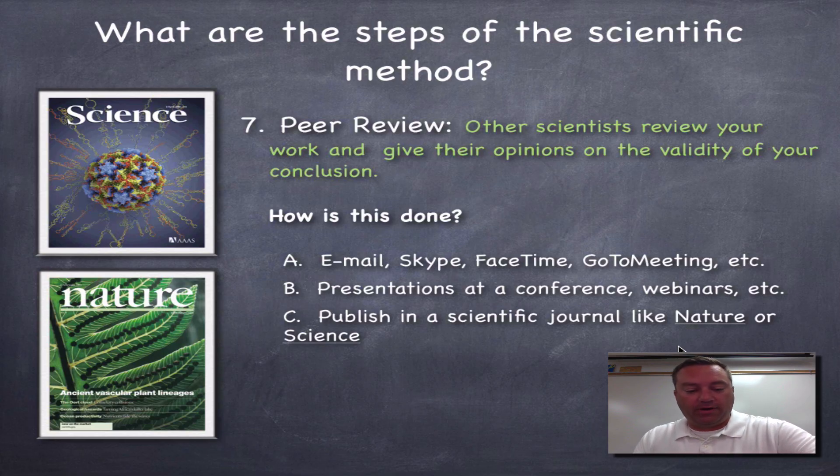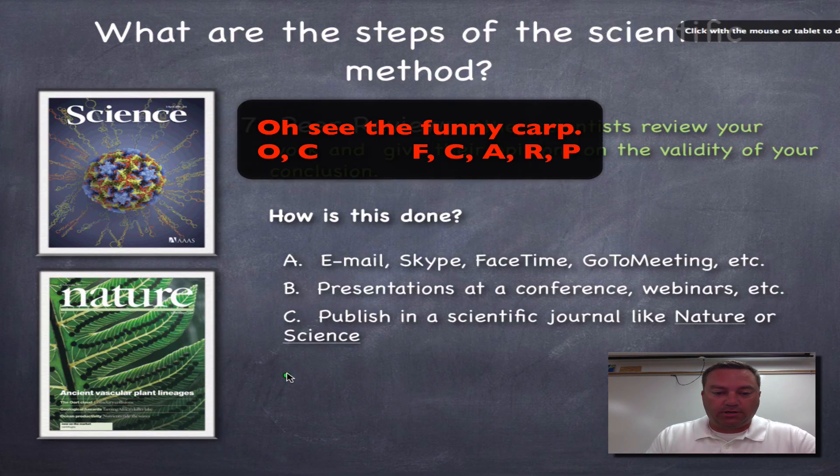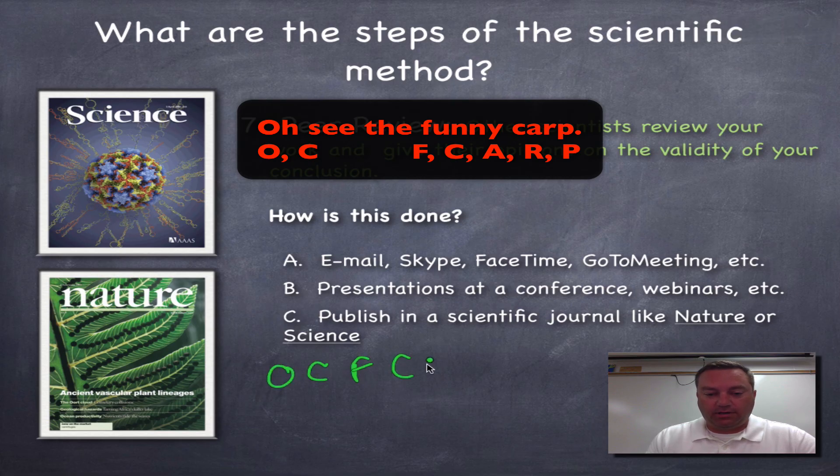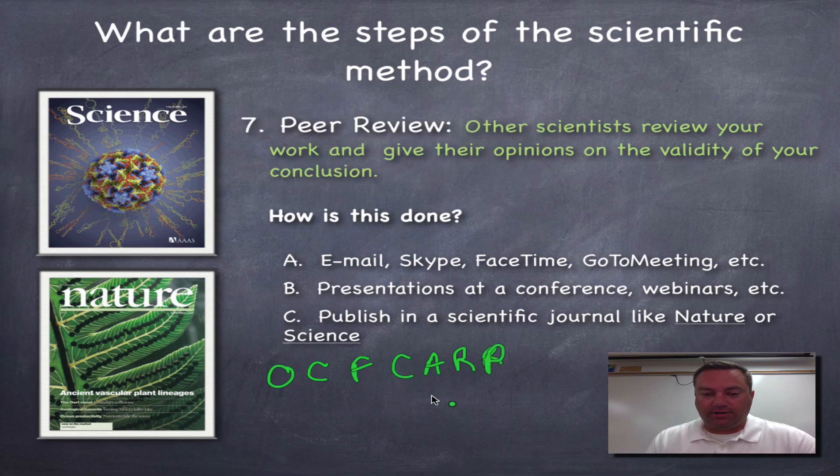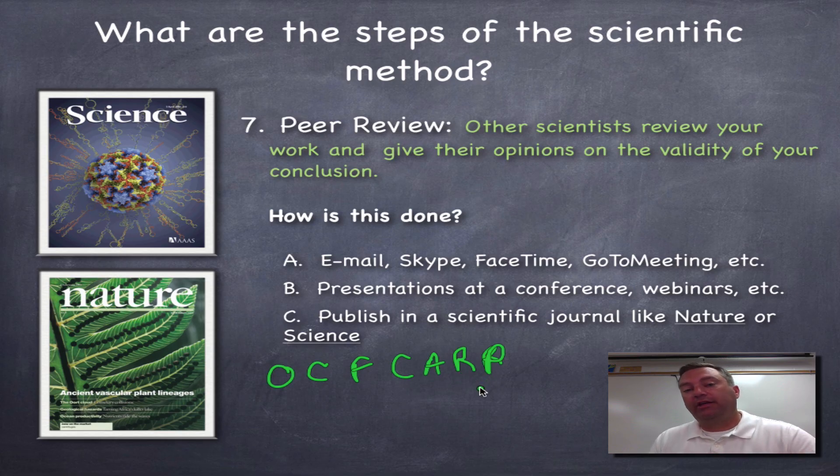So let's review. Remember, I have a really nice mnemonic device. OC, the funny carp. Observe phenomenon. Create a question. Form a hypothesis. A controlled experiment. Analyze the results and make a conclusion. Repeat to make sure that your results were not a fluke. And then, very importantly, peer review. Kind of a long episode. I really don't like them to go this long, but I couldn't help it on this one. So we're going to end it right here. Make sure you watch this episode maybe one other time. If you have any questions, ask your teacher. So until the next time, we're going to see you on the flip side.